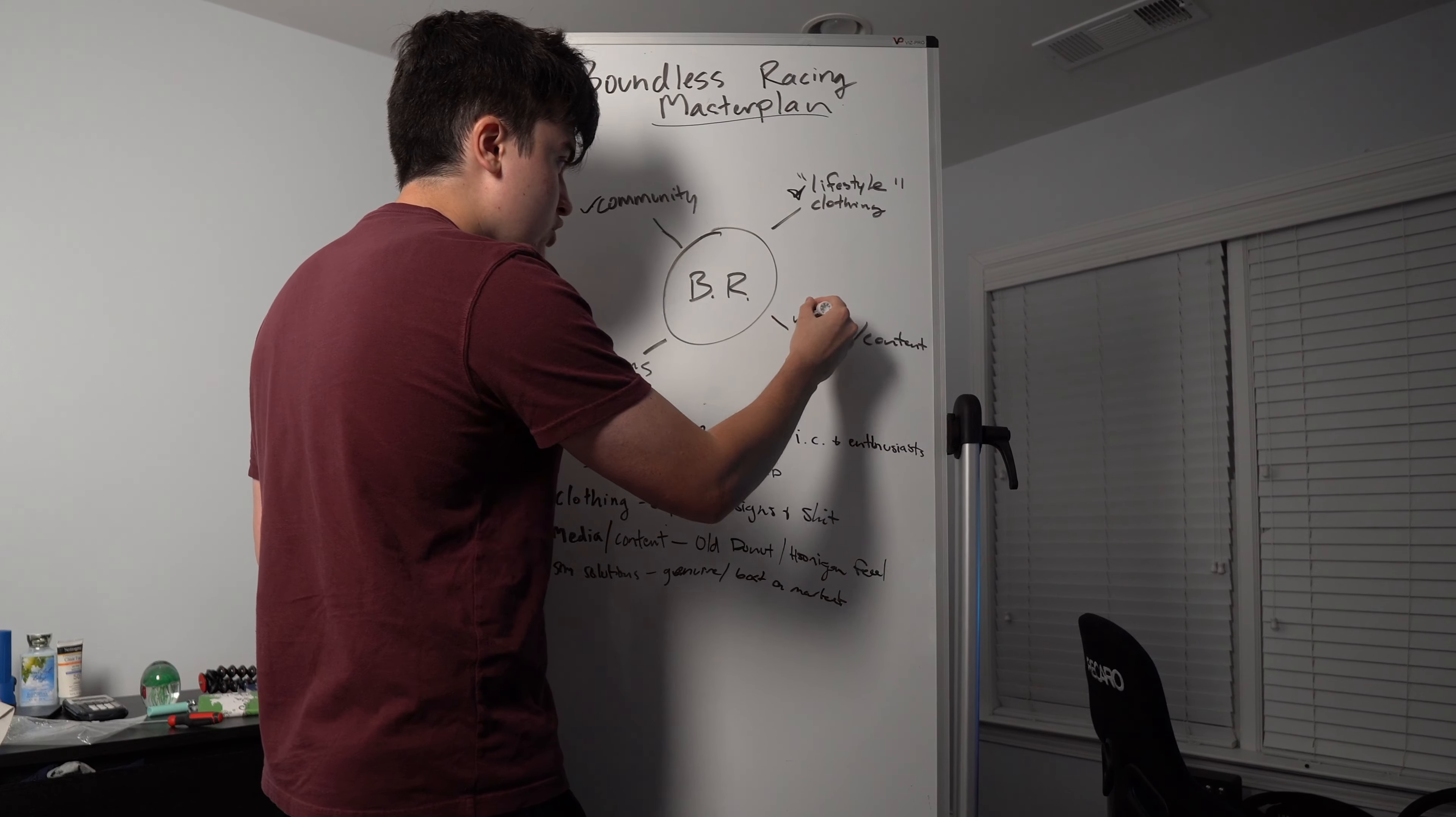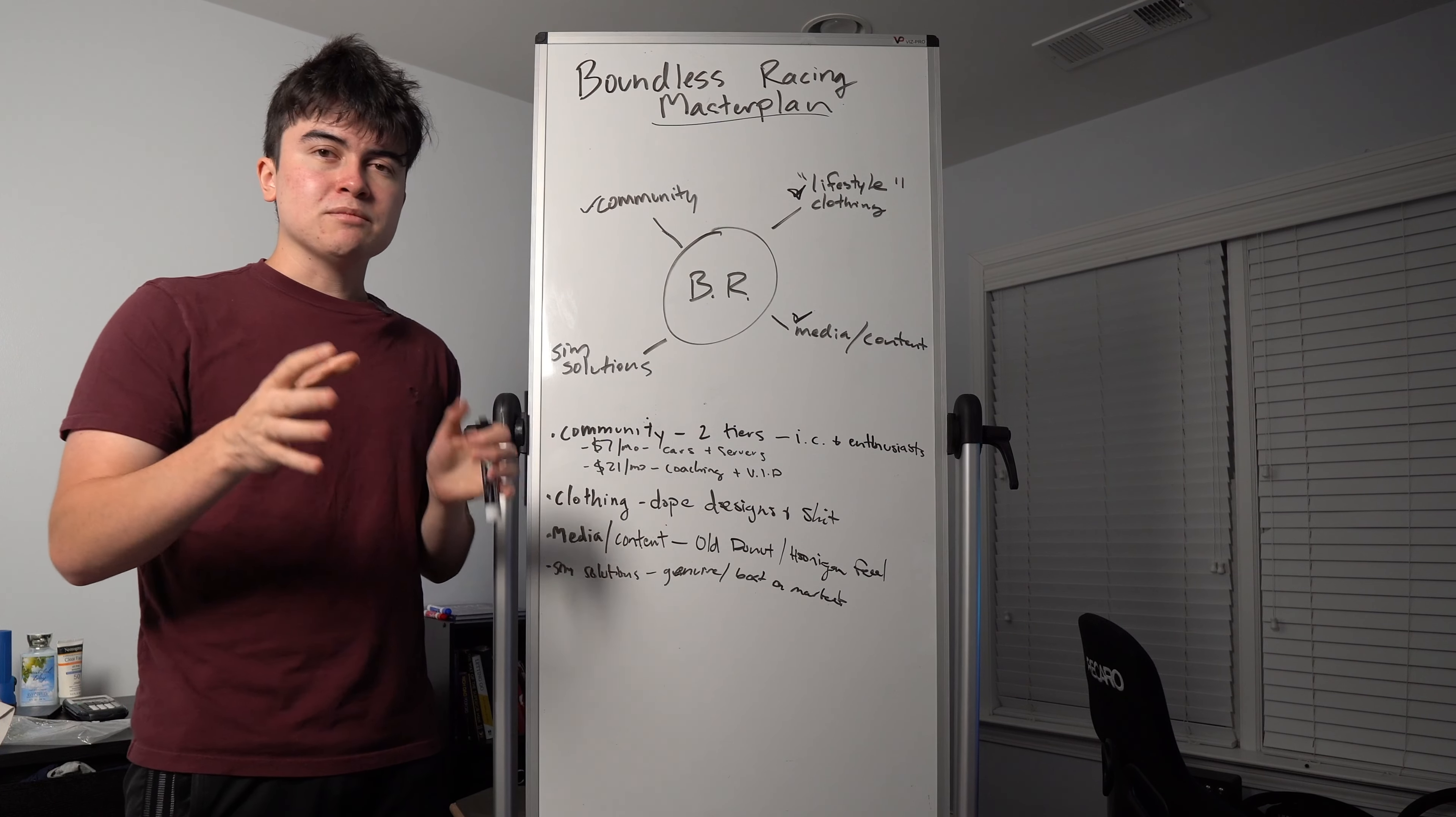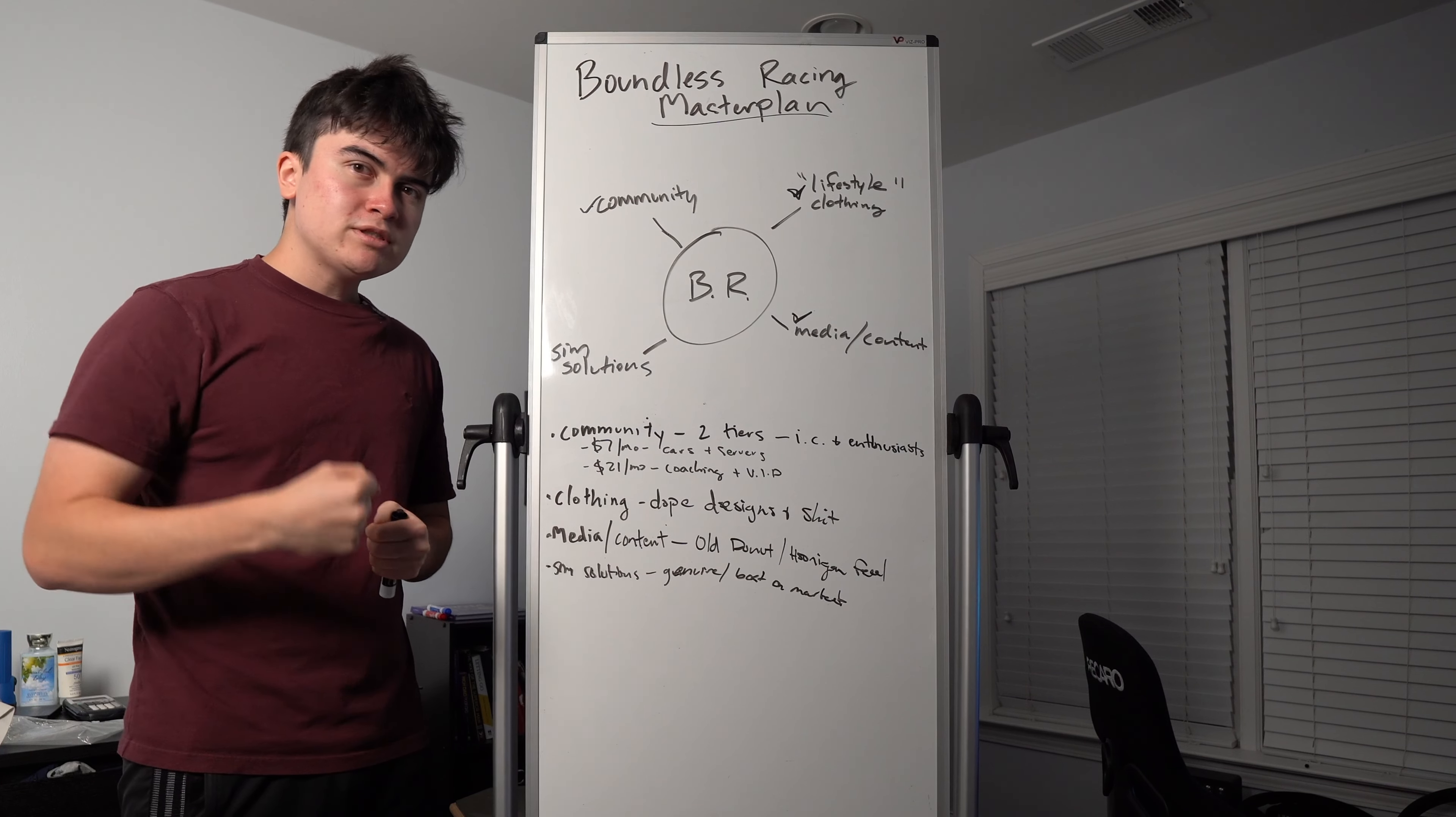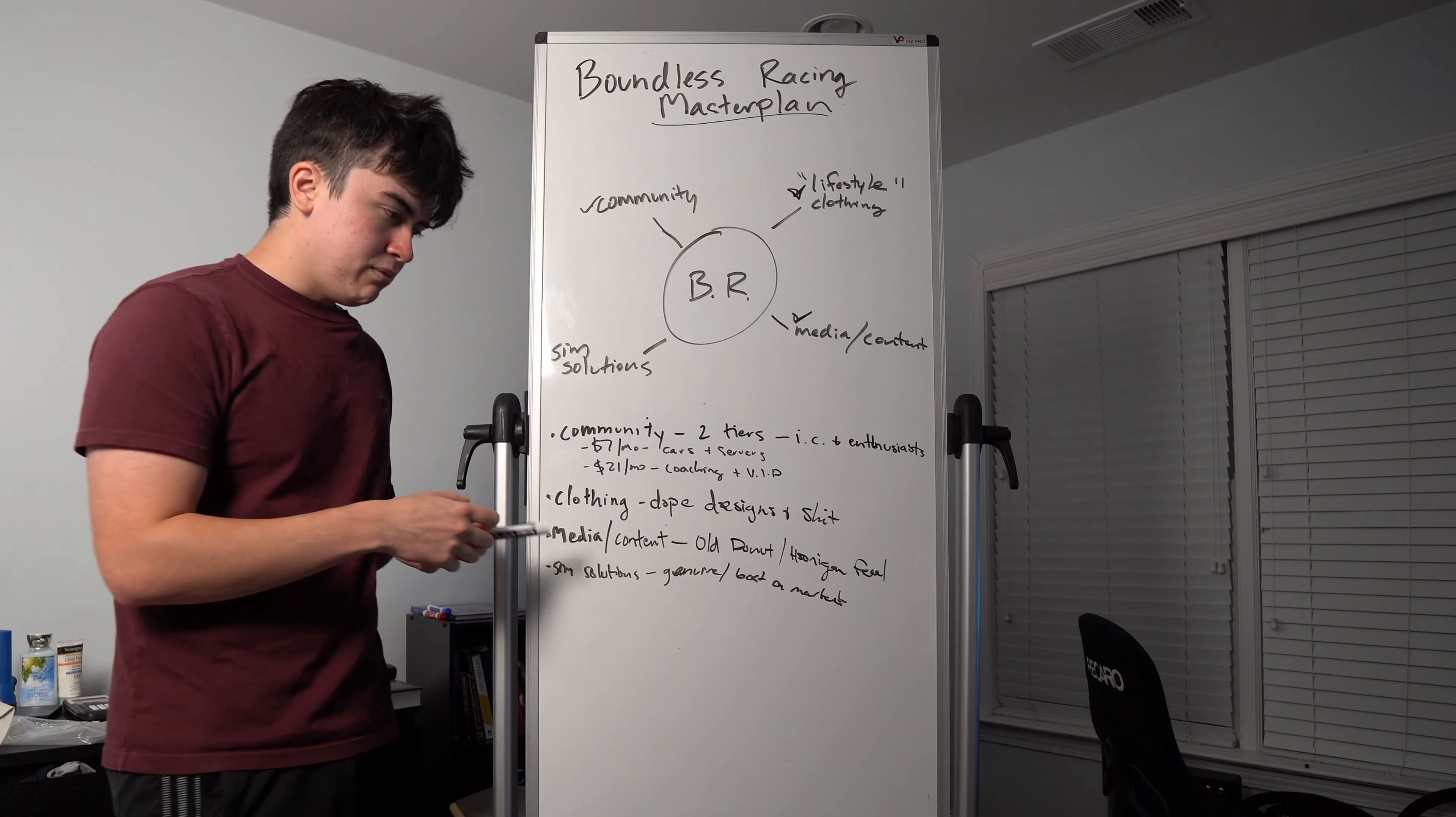So lifestyle clothing, we went over that. Next up, media and content. Now you may also be thinking, well Brandon, we already got Hoonigan and Donut Media. Why do we need more content?